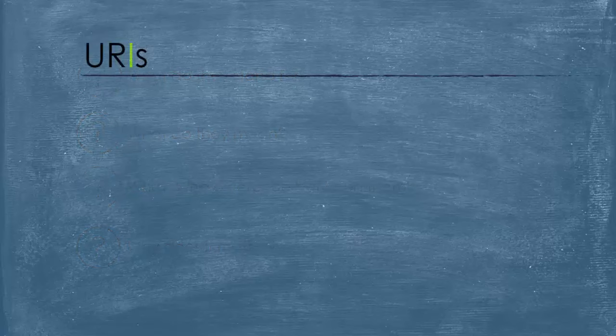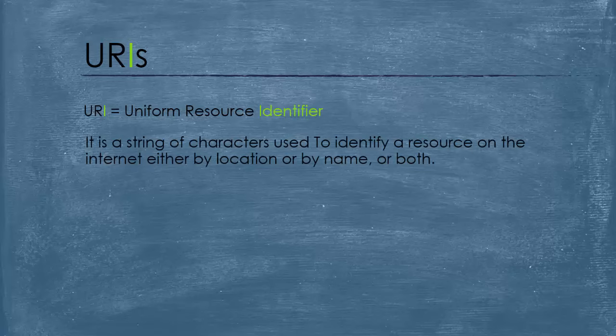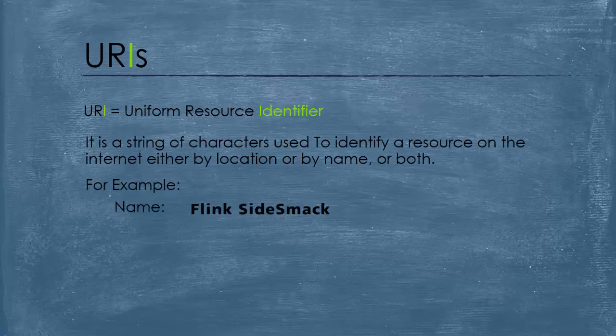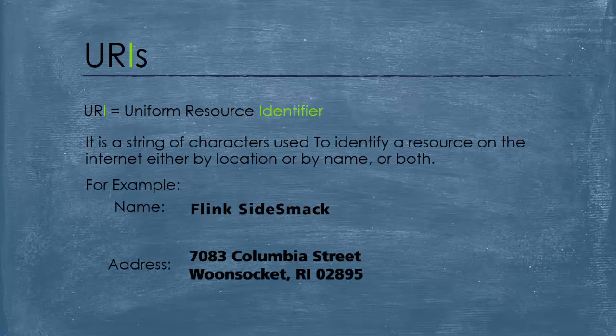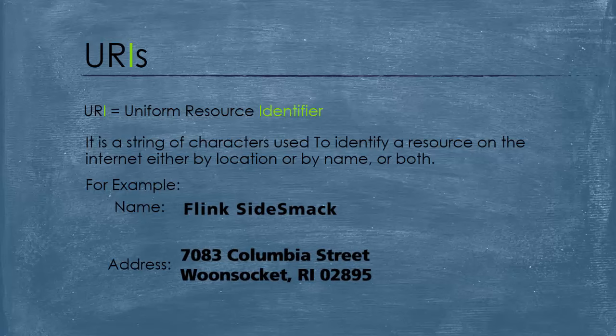The URI stands for Uniform Resource Identifier, and it is a string of characters used to identify a resource on the internet either by location, by name, or both. For example, let's say we want to get to a friend — his name is Flank Sidesmak — and this is his address. To actually do that we need to use either his name or his address. Think of the URI as using the name or the address to identify the person we want to get to. We can use both at the same time, and in both cases it is a URI.